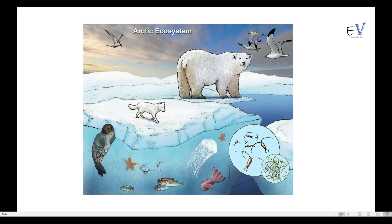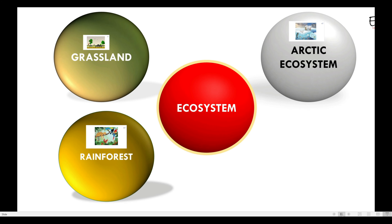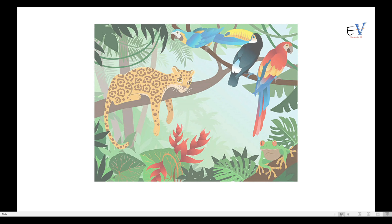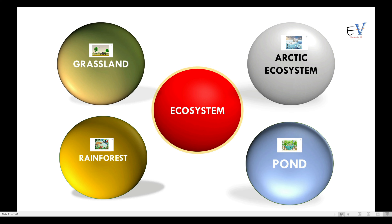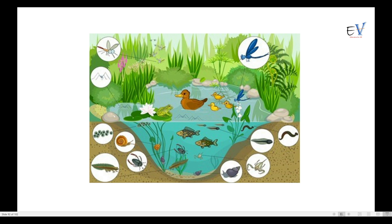In the next example, we have the rainforest ecosystem — an area of tall, mostly evergreen trees with a high amount of rainfall. It has rich biodiversity with varied plants and animals. Rainforests, grasslands, and arctic are all large ecosystems. We also have small ecosystems like a pond, or man-made ecosystems like an aquarium.